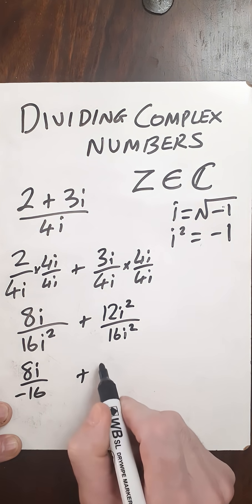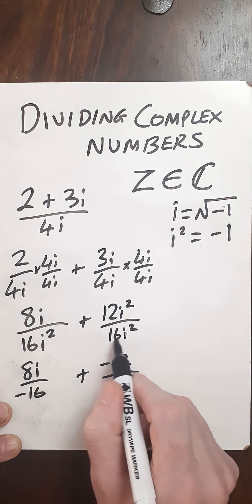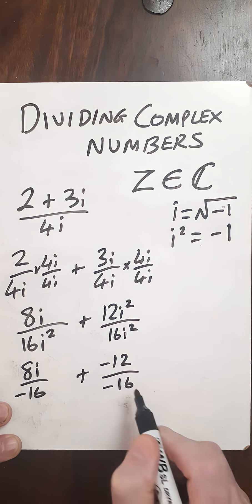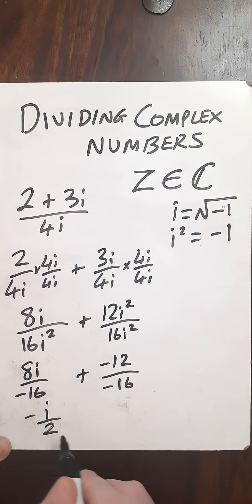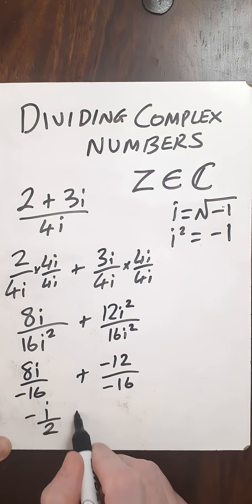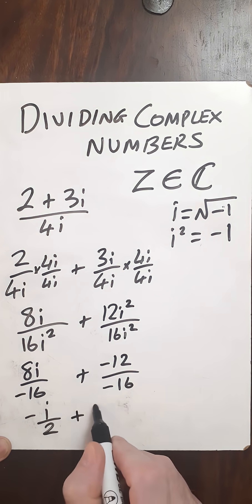And 12 times i squared becomes minus 12, 16 times i squared becomes minus 16. So then this simplifies to minus i over 2, this side becomes plus 3 over 4.